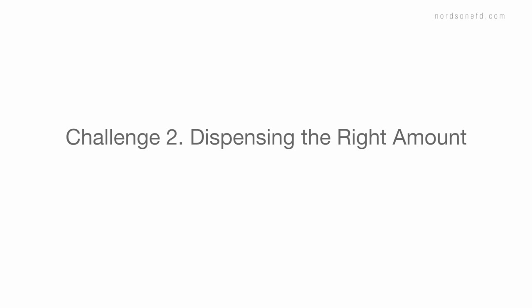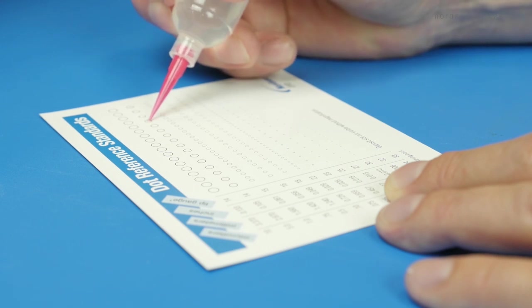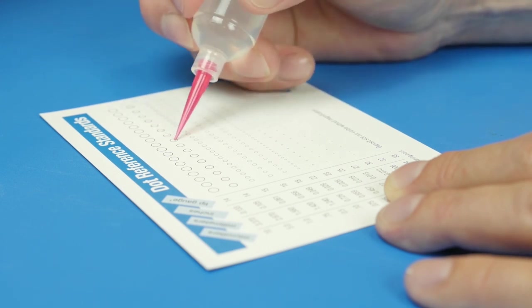The second biggest challenge is deposit size. The best CA bond is often created with a small amount of material. That's why it's important to have precise control of your deposit size.